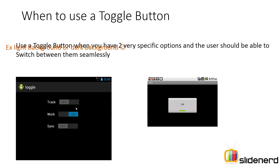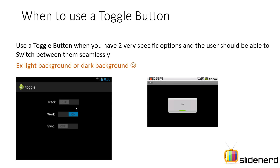For example, inside your app you might want to change the light background into a dark background, or a dark colored background into a light one, if it is a reading app — for usability.